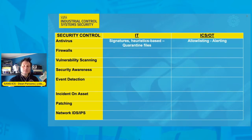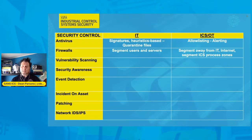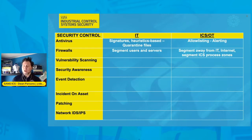Looking at the network perspective of firewalls specifically, in IT we have been segmenting users and servers in different environments. In the ICS, however, the objective is really to segment away from the IT networks and also segment away from the internet. This segmentation also goes further down into the control environment, segmenting out different process or engineering zones, usually following the Purdue methodology.